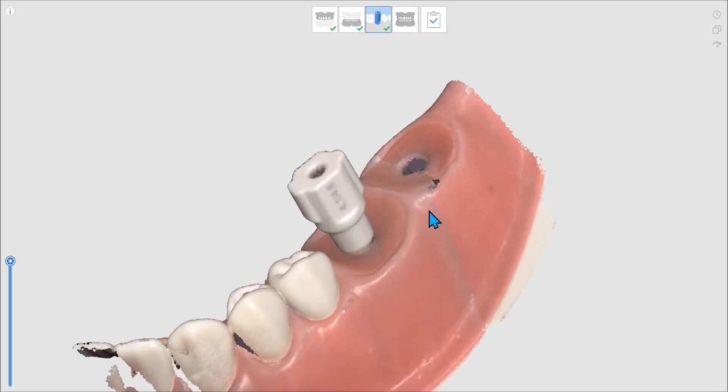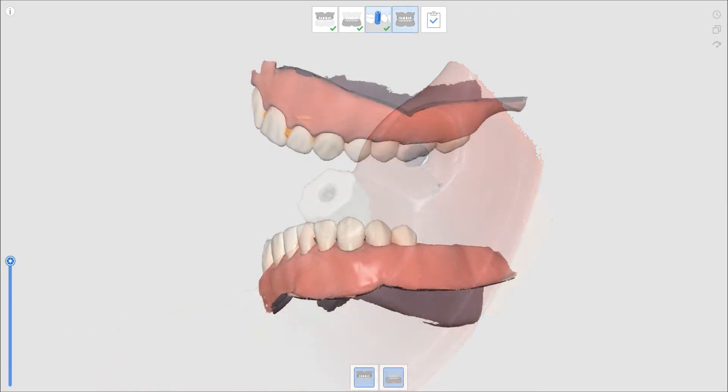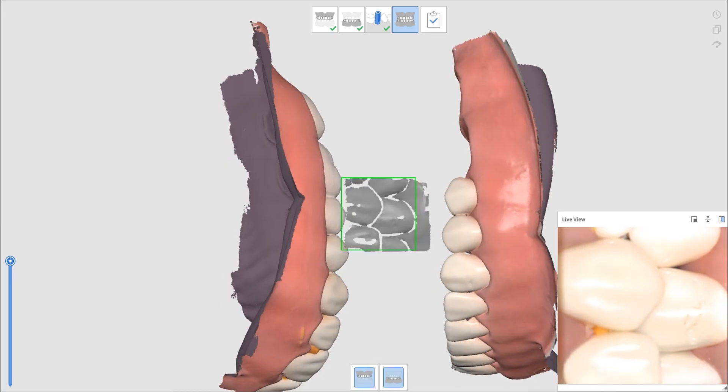Then proceed to the occlusion scan stage. When you scan the occlusion, begin with the occlusal area that's stable.